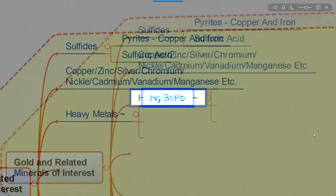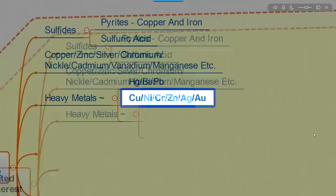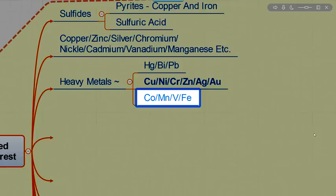So, for example, mercury, bismuth, lead, copper, nickel, chromium, zinc, silver, and of course, our friend gold, cobalt, manganese, vanadium, and iron.